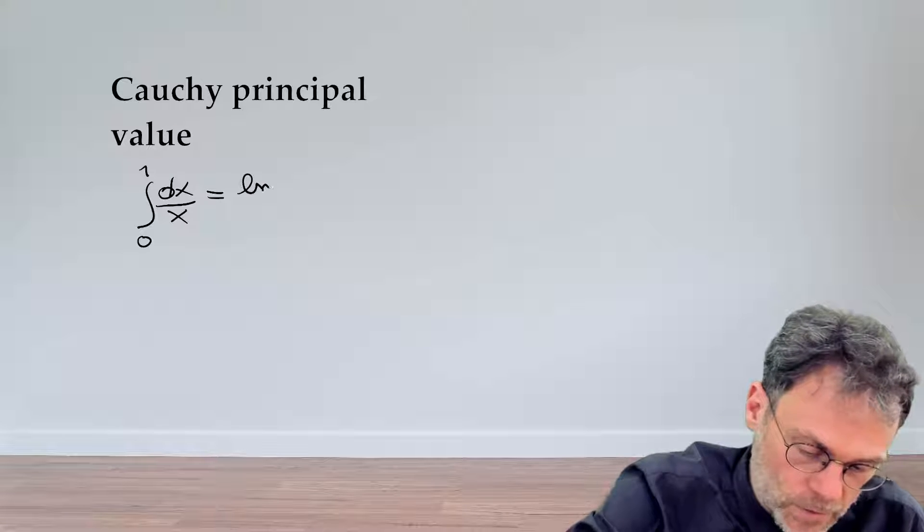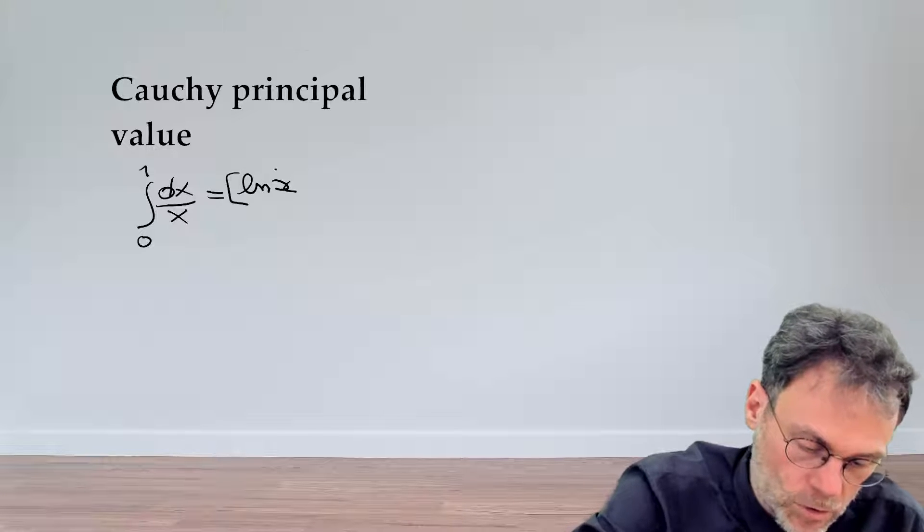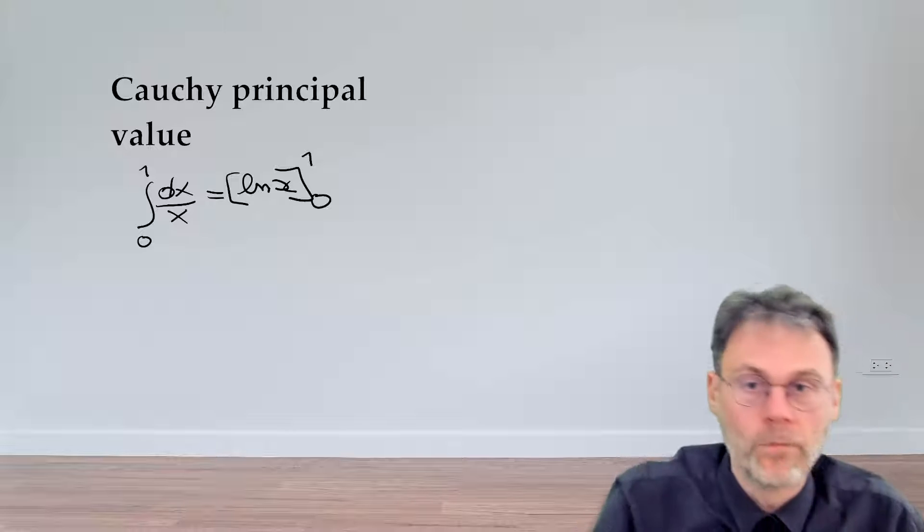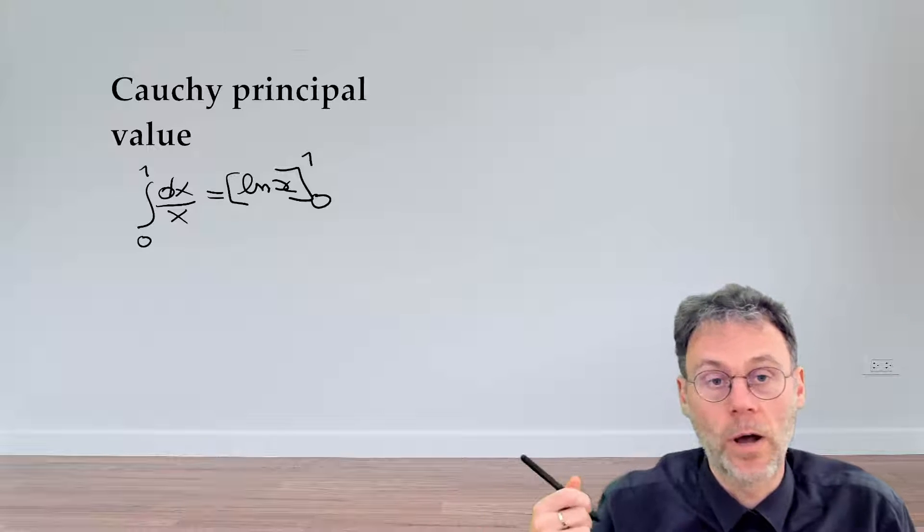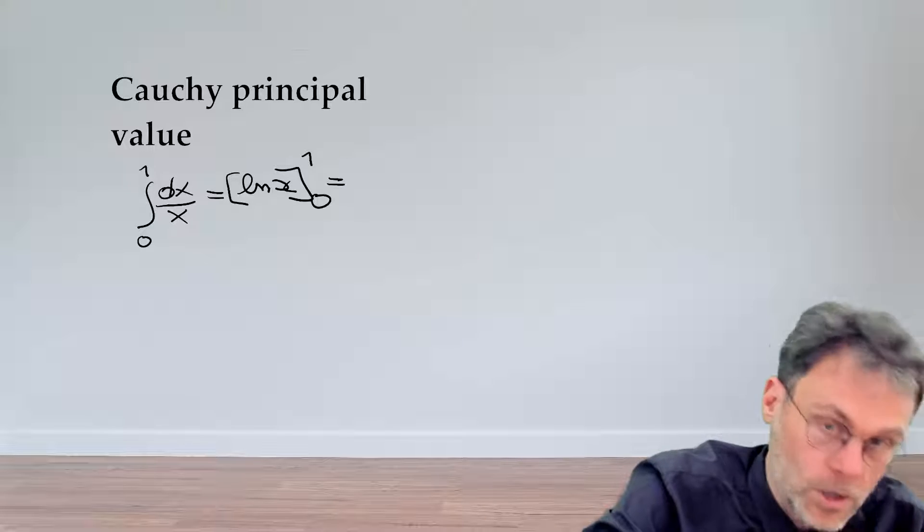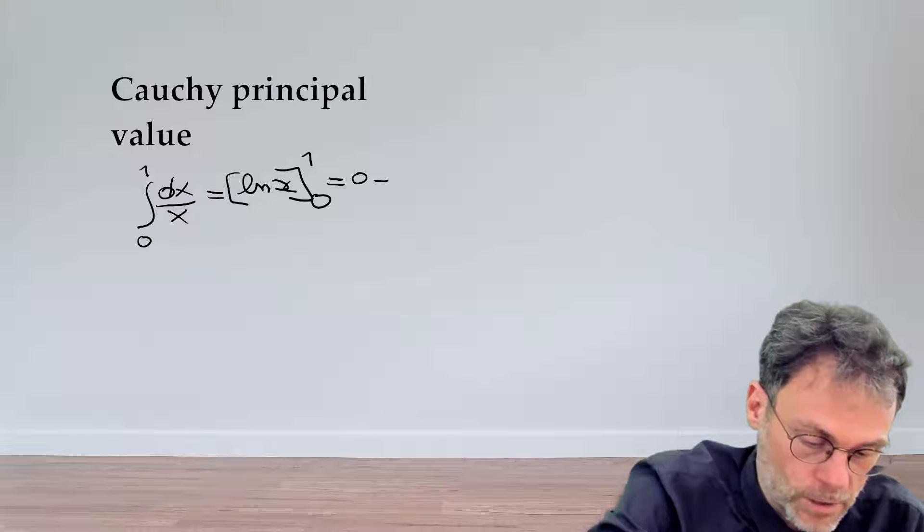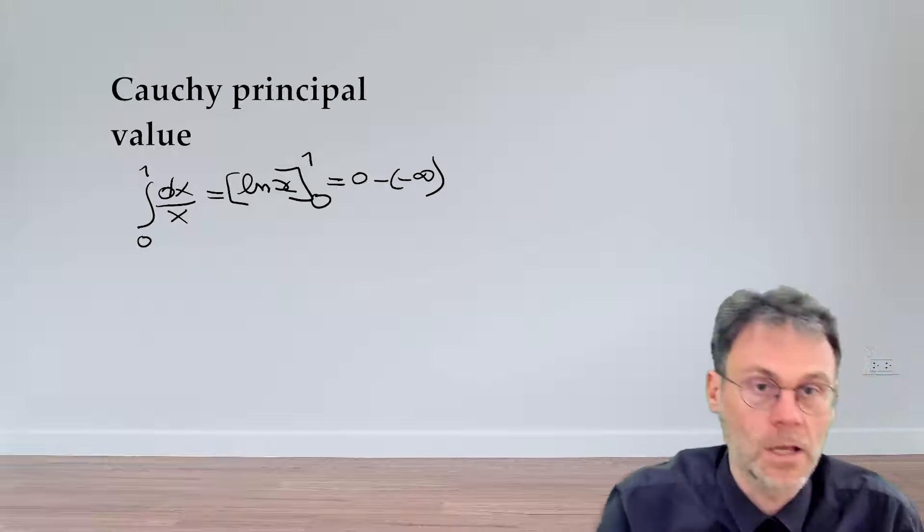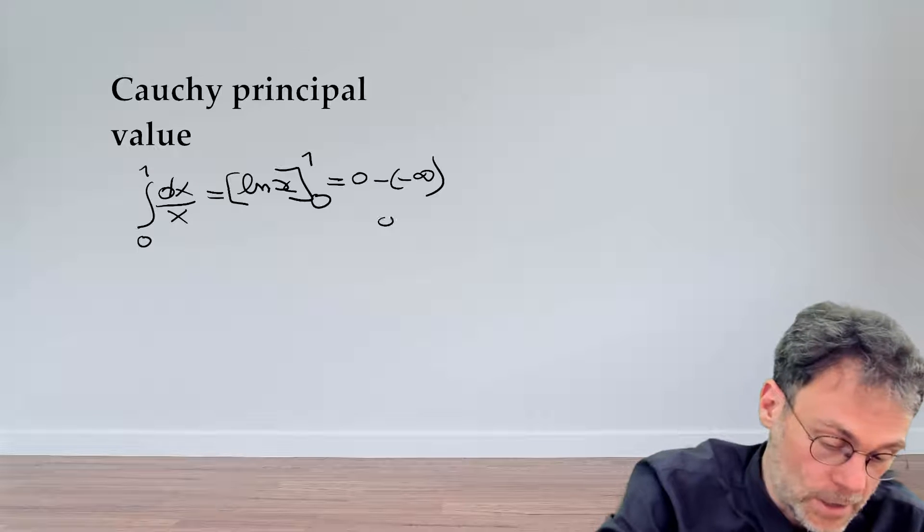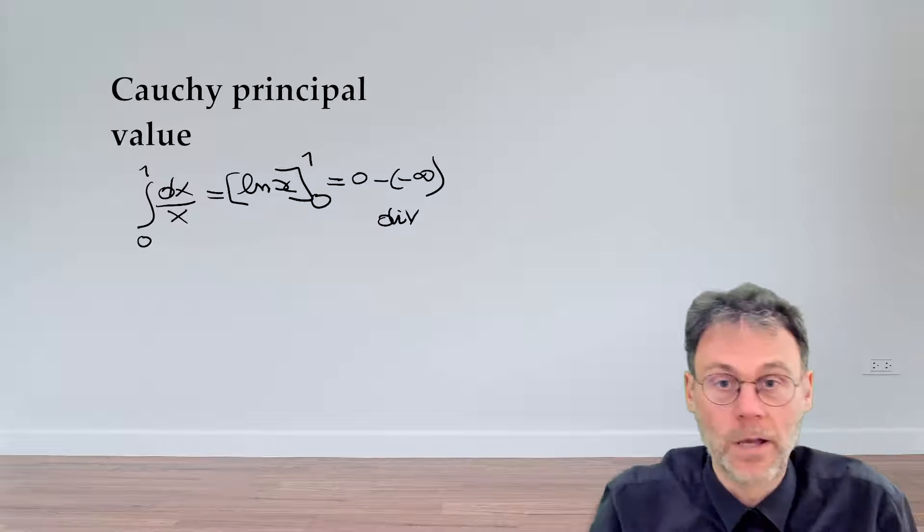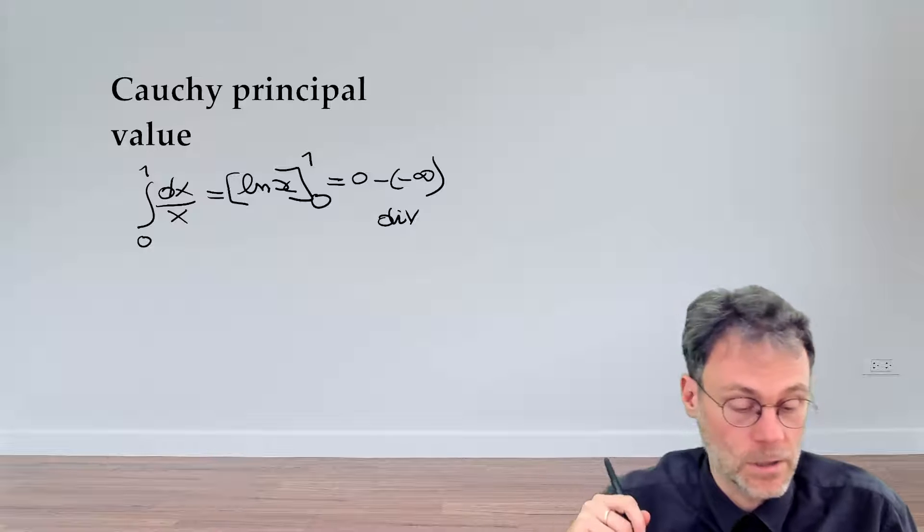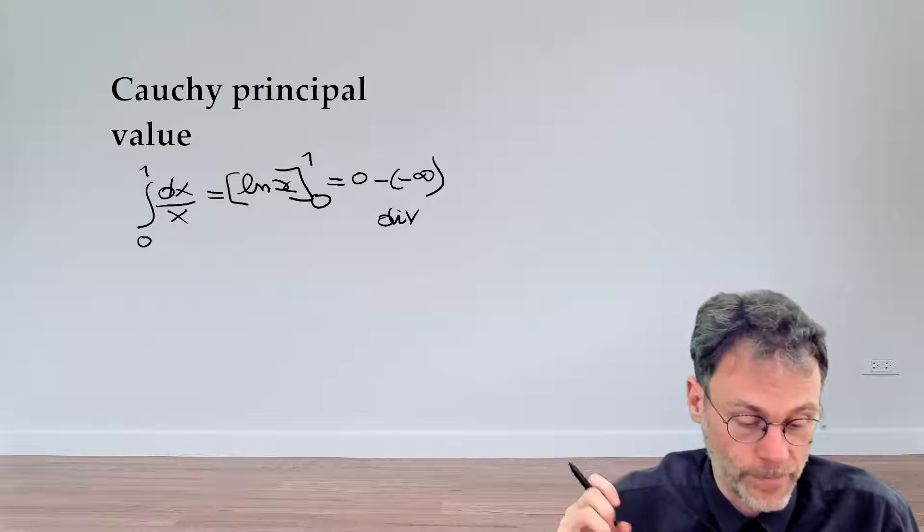We know since kindergarten that we can evaluate that as the logarithm of x evaluated at 0 and 1. This becomes the logarithm of 1 is 0 and then minus infinity. The important part is that this thing blows up, it diverges, it's an integral which is not defined, an improper integral.